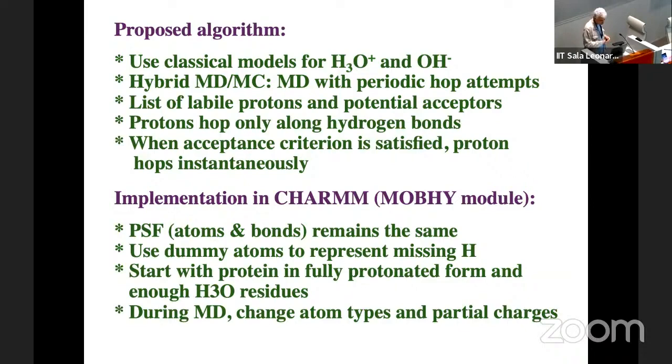This was implemented in the CHARMM program using the MOBHY module. The protein structure file, the number of atoms and bonds, remains the same. We use dummy atoms to represent missing H. We start with protein in fully protonated form and enough H3O residues. What changes during the simulation is the atom types and partial charges. When a proton hops, it becomes a dummy atom, and the new location changes from a dummy atom to an actual proton. Usually we have like 5 or 10 H3O residues, and typically one of them is an actual hydronium. If hydronium wants to donate a proton to a TIP3 molecule, we flip the positions of TIP3 with an H3O residue and do the transfer.